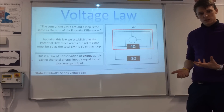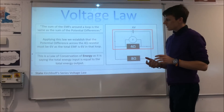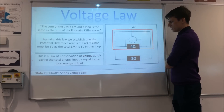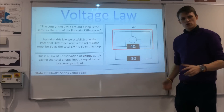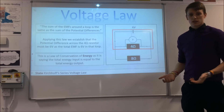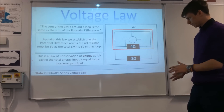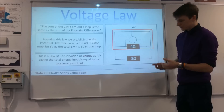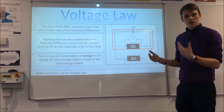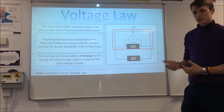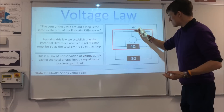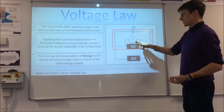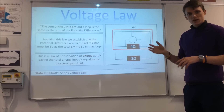The series voltage law states that the sum of EMFs around a loop equals the sum of the potential differences. In a parallel circuit, a loop would be one section containing a power source and some resistance. So around this loop with 6 volts of EMF from the cell, there must be 6 volts of potential difference across the resistance. Again this is conservation of energy: 6 joules per coulomb are put in by the cell, so 6 joules per coulomb must be taken out.